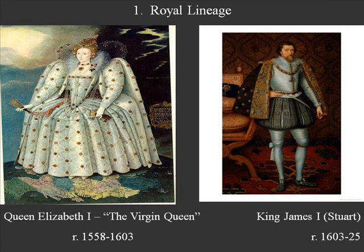He becomes king of England on Elizabeth's death, moves south to London, and lives in England basically for the rest of his life. He becomes known as King James I of England while he is still James VII of Scotland. So he is king over two different governments at the same time.